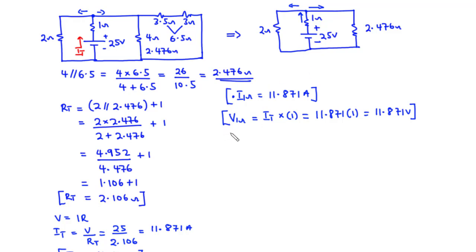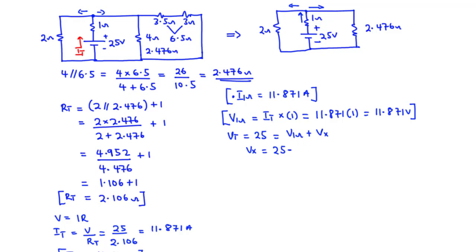The remaining voltage can be found by subtracting the voltage dropped across the 1 ohm resistor from the 25 volt source. The voltage divider rule shares voltages between resistors connected in series. So: Vx = 25 − 11.871 = 13.129 volts. This is the left voltage.